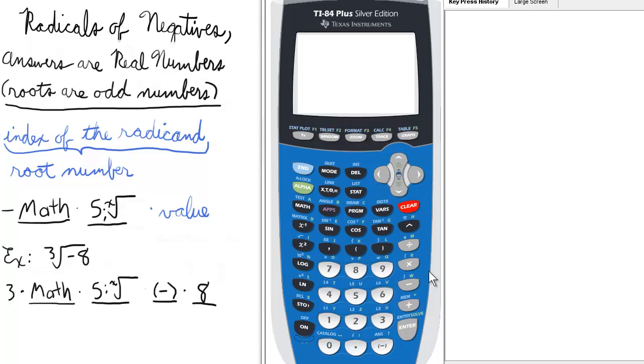To give an example, the cube root of negative 8: first we'll press 3 as the index of the radicand, and then we press math, and then from the math menu we select 5, which is the xth root of a number, and then we press the negative sign, n8 for negative 8, and then enter. So the cube root of negative 8 is negative 2.